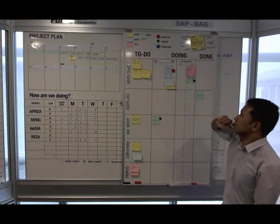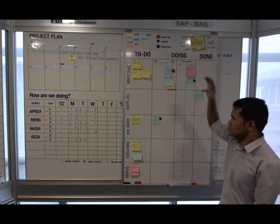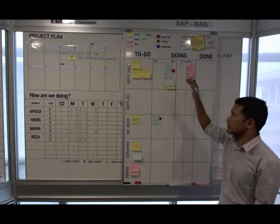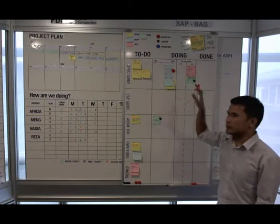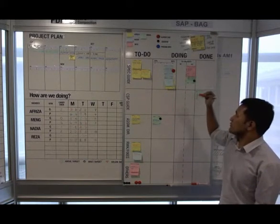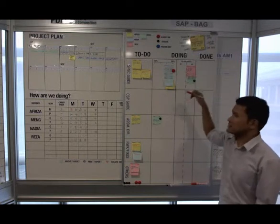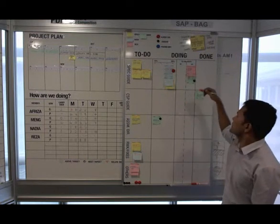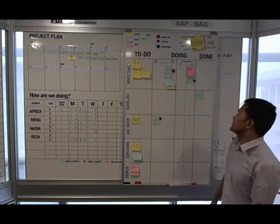The to-do column is where we put all of the work that we get. Doing is our work in progress, and done is work that has been completed.